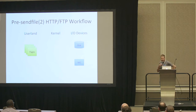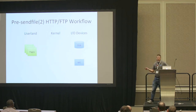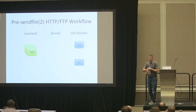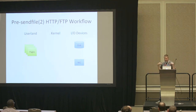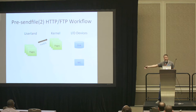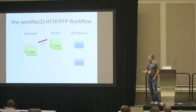Before we had sendfile, let's walk through the workflow for a typical web or FTP server. We start in userland with data we want to send — specifically the contents of a file — to a client over a socket. We allocate some memory in userland. We call read, which goes inside the kernel. The kernel needs its own memory for the data; if you're lucky it's already in the buffer cache, otherwise we go talk to the disk.